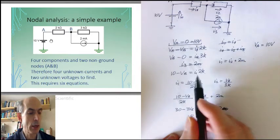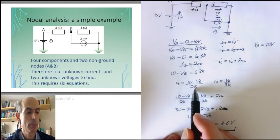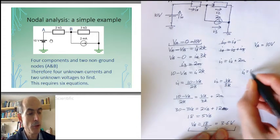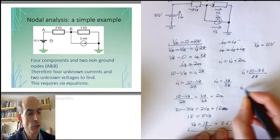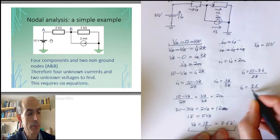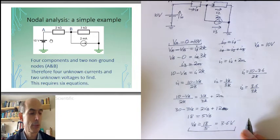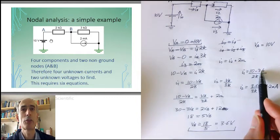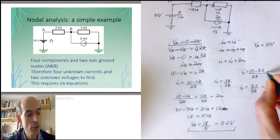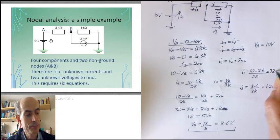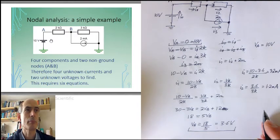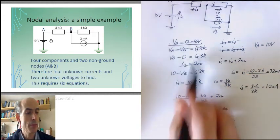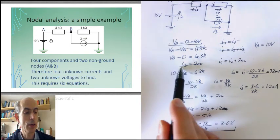We've got VB. I can tell from this equation here that VA is just equal to 10 volts. So I've got my two voltages now. What about the currents? Well, I know that I1 is 10 minus VB divided by 2K, and I2 is VB over 3K. I now know what VB is, so I1 must be 10 minus 3.6 divided by 2K, and I2 is 3.6 divided by 3K. 3.6 divided by 3K is 1.2 milliamps. 10 minus 3.6 is 6.4. 6.4 divided by 2K is 3.2 milliamps. And I0 is equal to I1, so this is true for I0 as well. And that only leaves I3, and I3 is 2 milliamps. We can see that directly from this equation here.